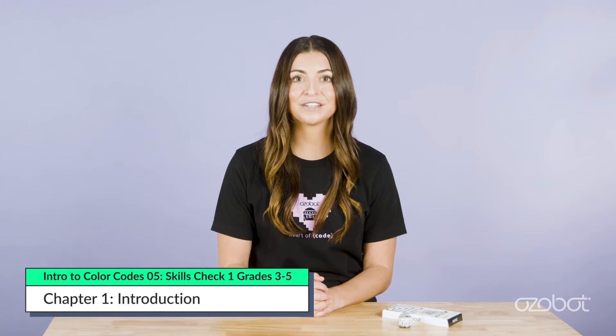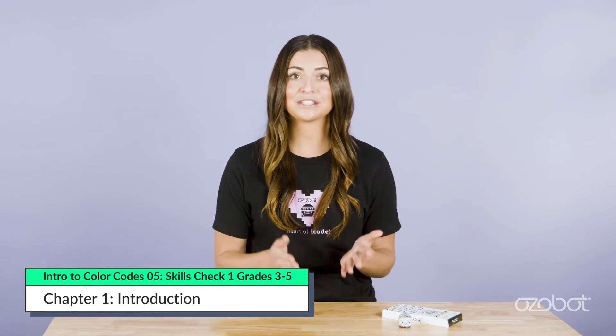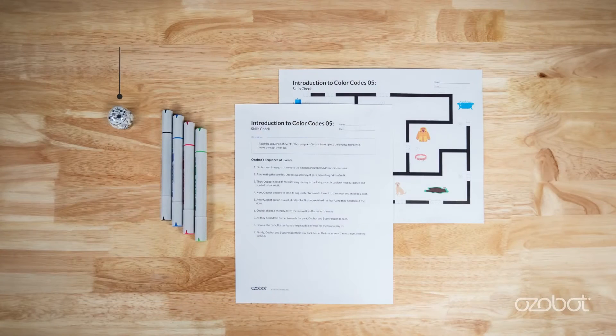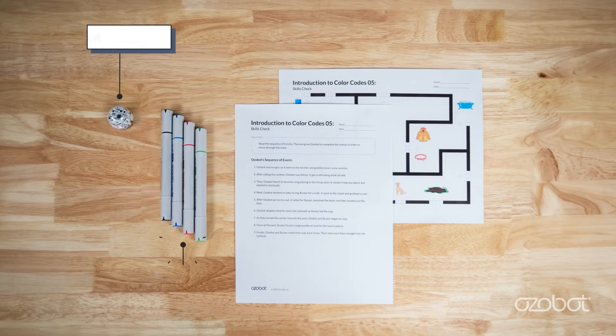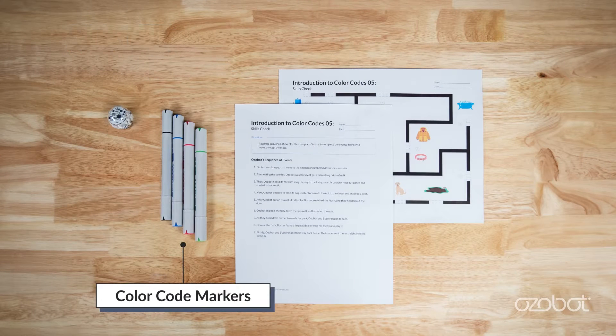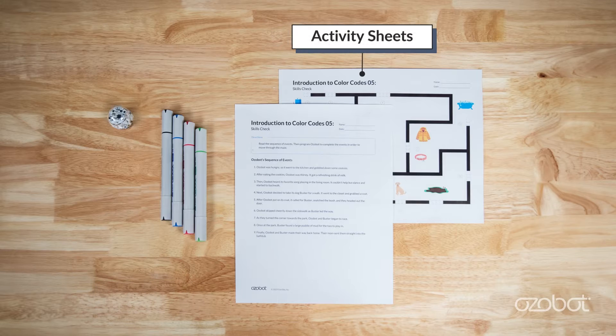Time for your first skills check. You'll use what you've learned so far about color codes to help Ozobot demonstrate a sequence of events and move through a maze. You will need an Ozobot fully charged and calibrated, color code markers, and both pages of the Intro to Color Codes 5 skills check activity sheet.